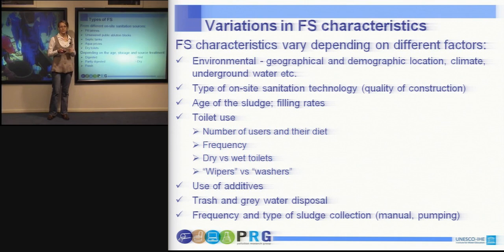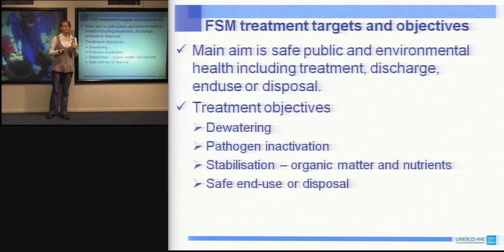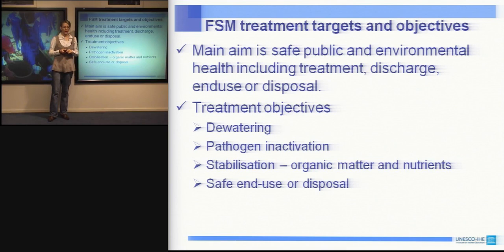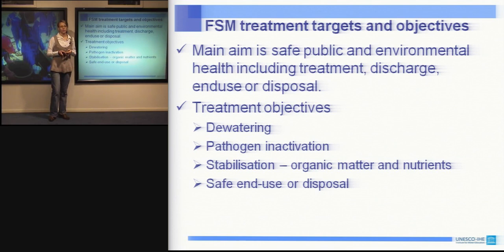Coming back to fecal sludge treatment targets and objectives, the main aim is to provide safe environmental and public health, which supports the entire chain of fecal sludge management, starting from treatment, discharge, and use or disposal. To meet this aim, there are a number of objectives: pathogen inactivation, stabilization of organic and nutrient matter, and safe end-use and disposal. Dewatering is an important step because it provides significant reduction in the volume of fecal sludge, making it easier for transportation or further treatment.